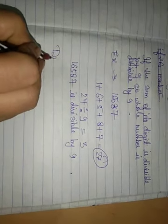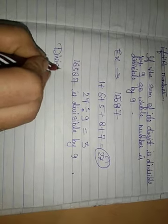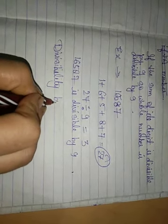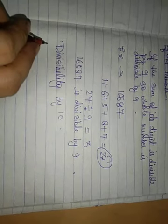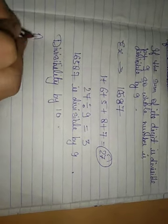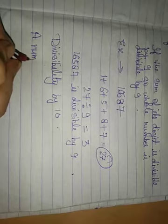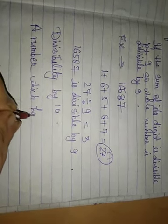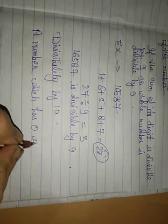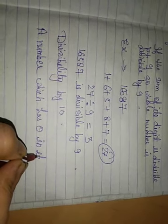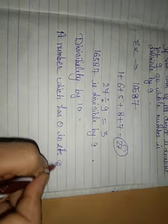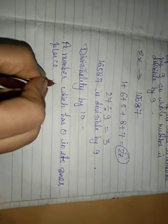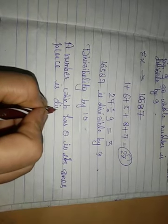Divisible by 10. A number which has 0 in its ones place is divisible by 10.